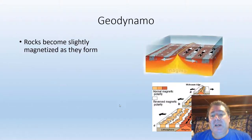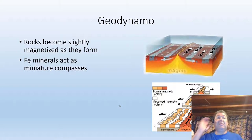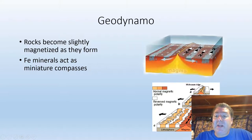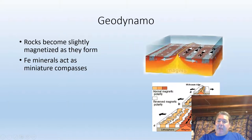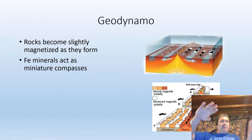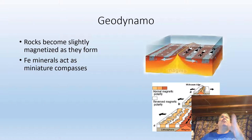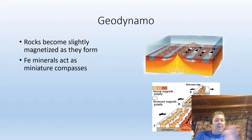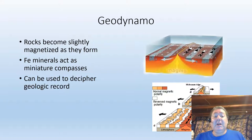Another part of the geodynamo: rocks can become slightly magnetized as they form, especially volcanic rocks. Within many rocks are little iron minerals — iron being a magnetic mineral — that act as little compasses. So when hot magma comes out of a vent on the surface of the Earth, those little iron minerals in the liquid are acting like compasses pointing to where north was. When the rock cools, that little compass — that iron mineral — is frozen in time, pointing forever to where north was when that rock formed, no matter how those plates move around our planet. This can help us interpret our geologic record.